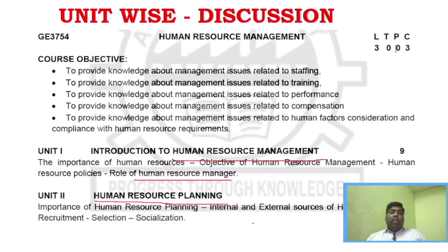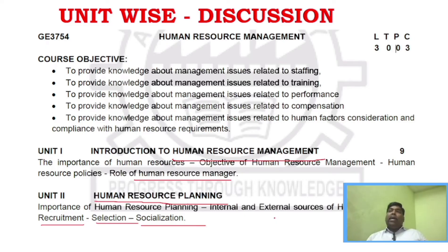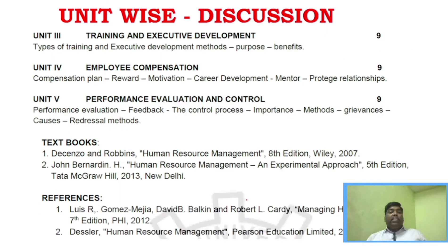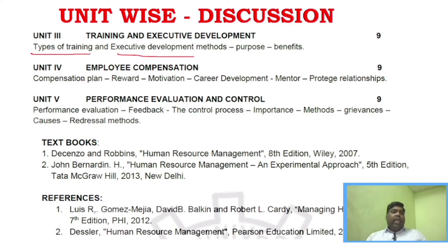In Unit 2, Human Resource Planning, you need to understand a lot of things. Recruitment and selection are separate topics and asked separately. Key areas to concentrate on are: HR planning — what is the need, objective, importance — and internal and external sources of recruitment. That is more than enough for Unit 2. For Unit 3, there are two types of questions: types of training and executive development, including their need, purpose, and types.